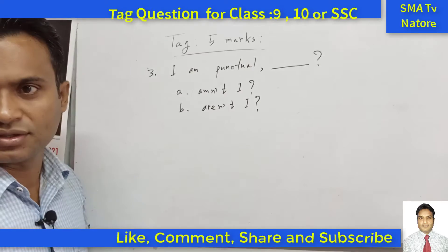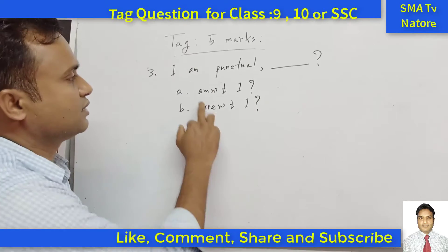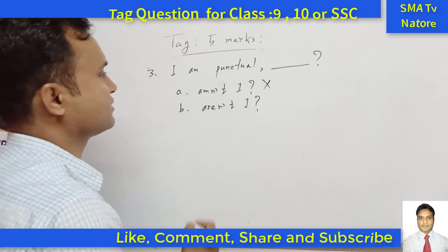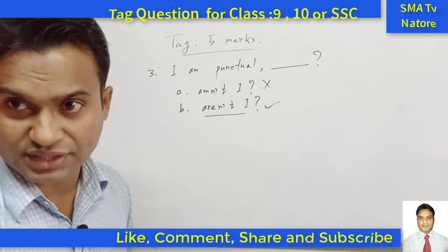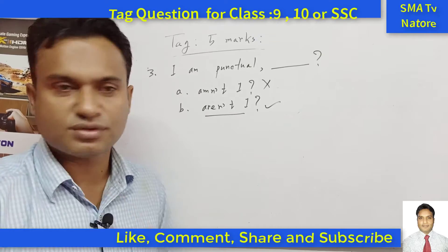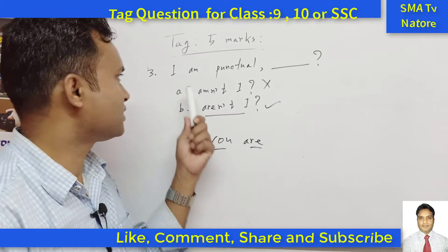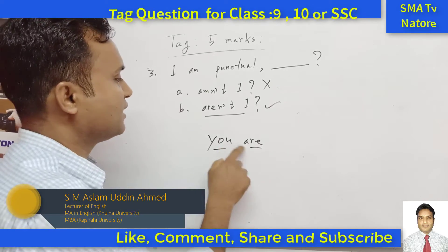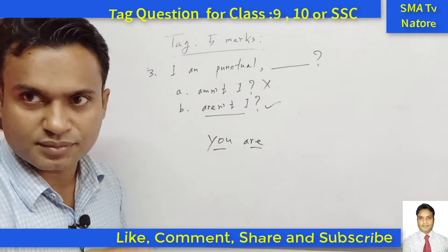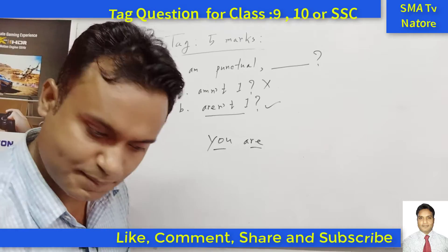'I am punctual' — that is, I am disciplined. So what is the tag: 'am I' or 'aren't I'? This is an exception. When 'I am' is the subject, the tag uses 'aren't I.' The sentence is affirmative, so the tag must be negative, and 'aren't I' carries the 'not.' Therefore the correct answer is 'aren't I.'